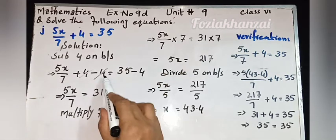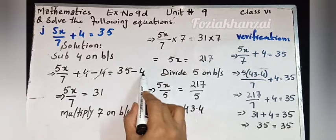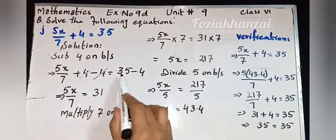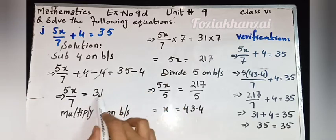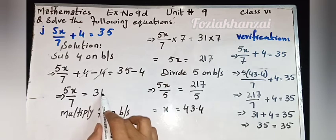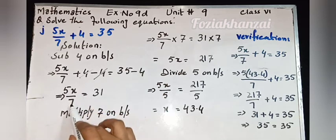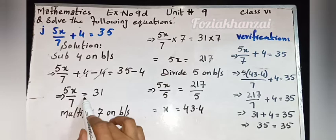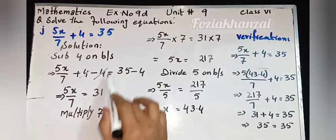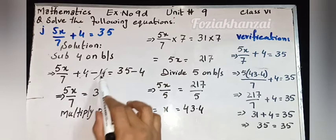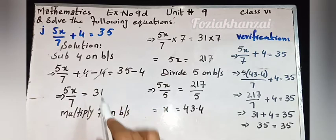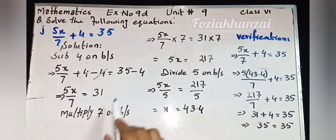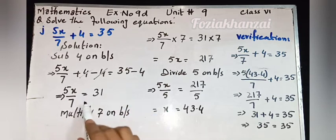After applying subtractive property, 5x upon 7 is equal to 35 minus 4. Next step: 35 minus 4 is equal to 31. So 5x upon 7 is equal to 31. First step is done.